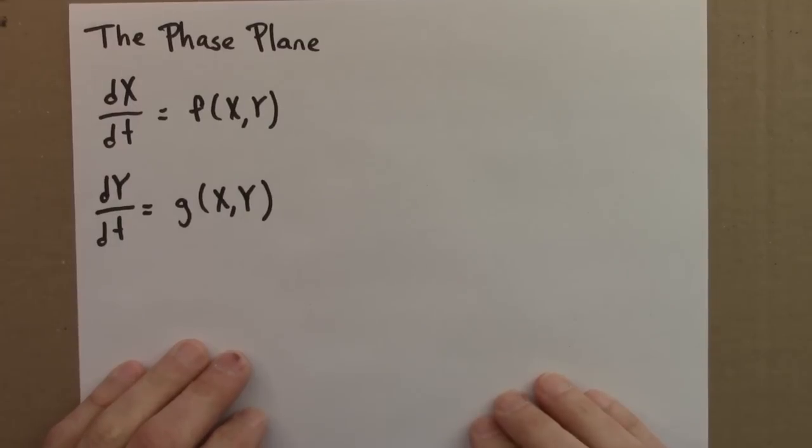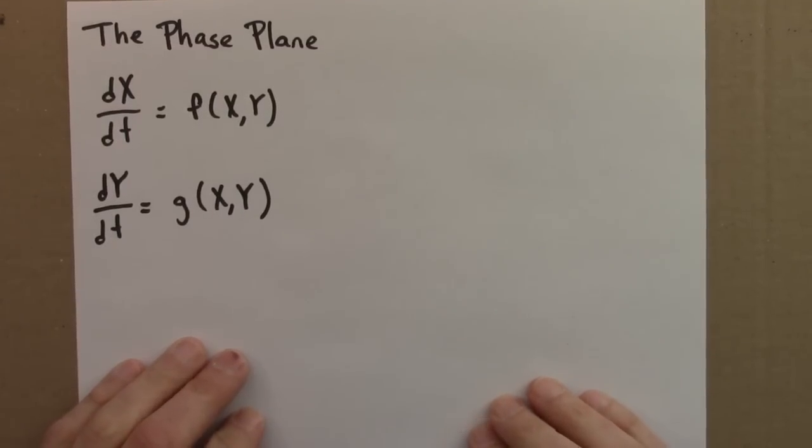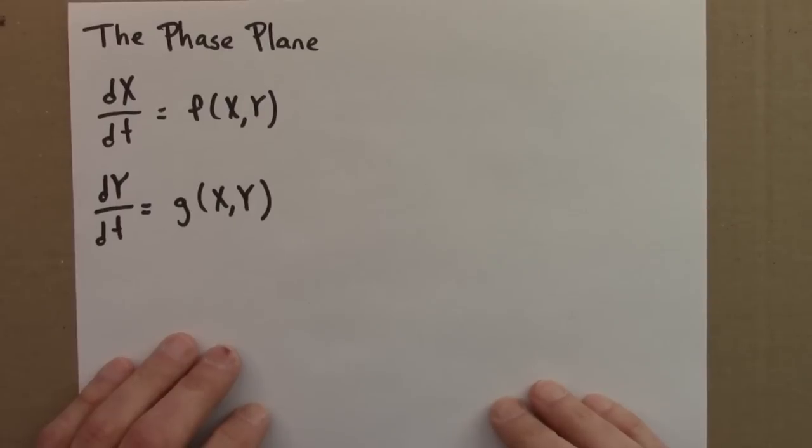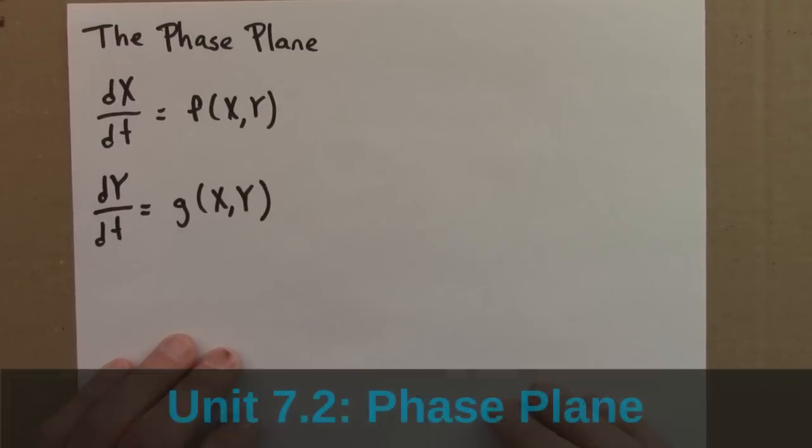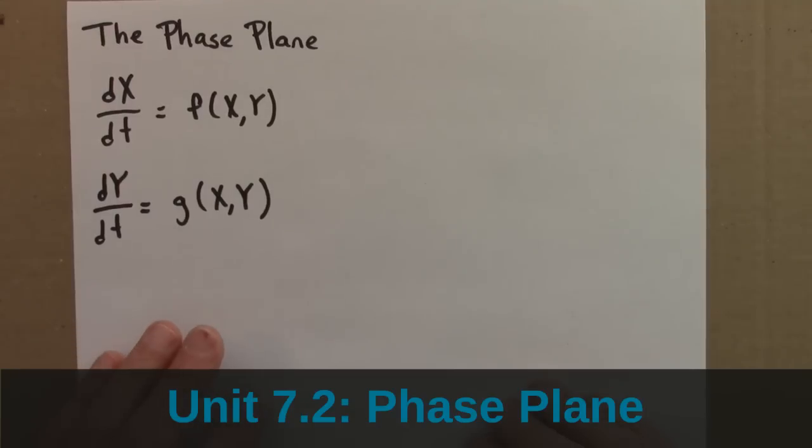In the last subunit, we looked at the Lotka-Volterra equations as our first example of a two-dimensional differential equation. In this subunit, I'd like to look at two-dimensional differential equations more generally and focus on properties of the phase plane. In this video, I'll start with a couple of examples.